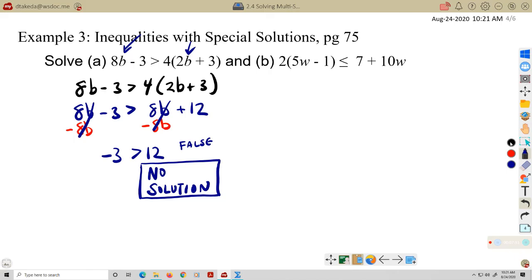Let's look at example b: 2 times the quantity 5 times w minus 1 is less than or equal to 7 plus 10w. Let's distribute on the left side. 2 times 5w is 10w, 2 times negative 1 is negative 2. The right side will stay the same: 7 plus 10w. Let's collect our variable terms on one side, so negative 10w, negative 10w on both sides.